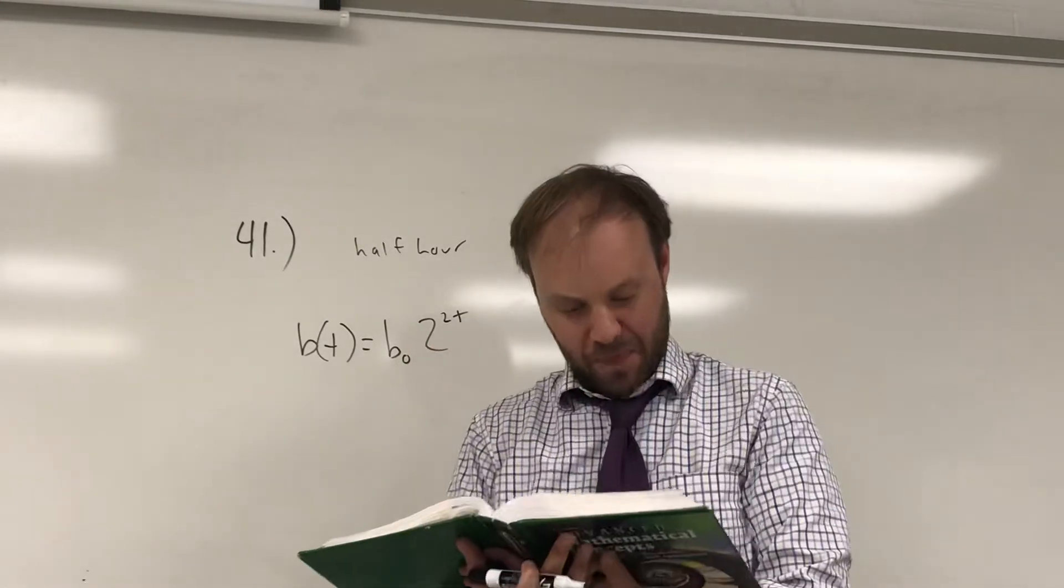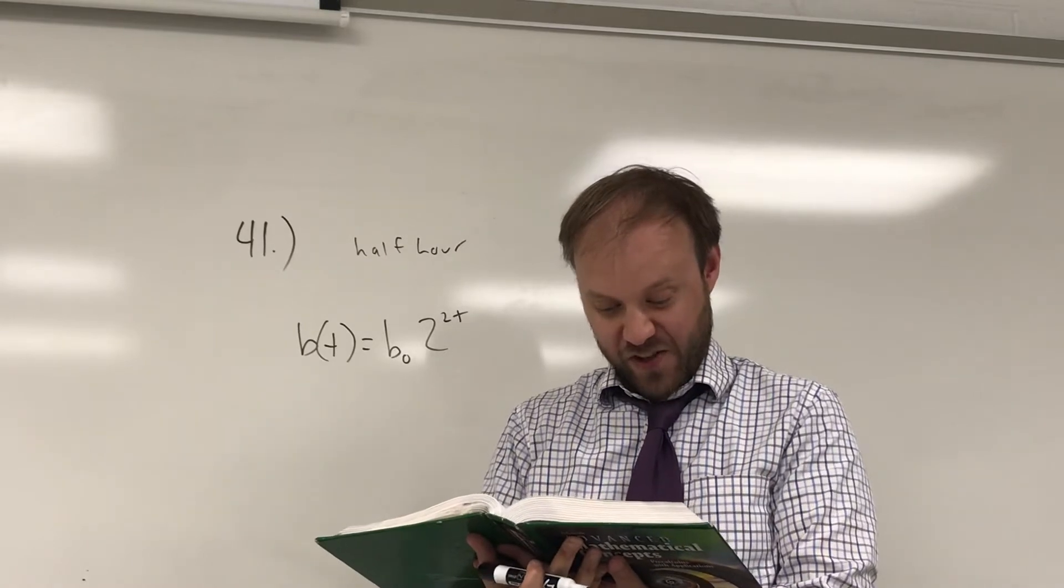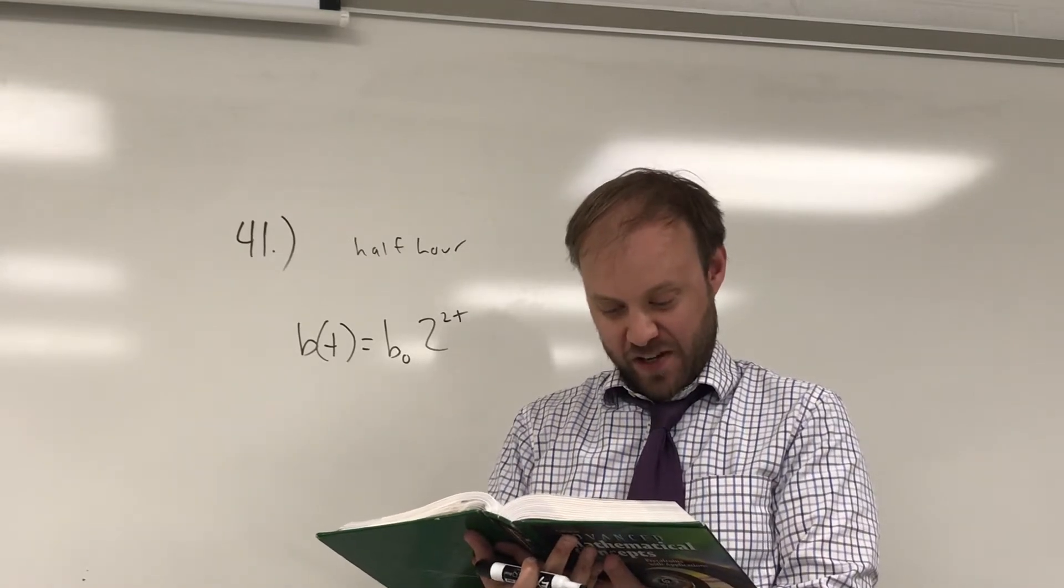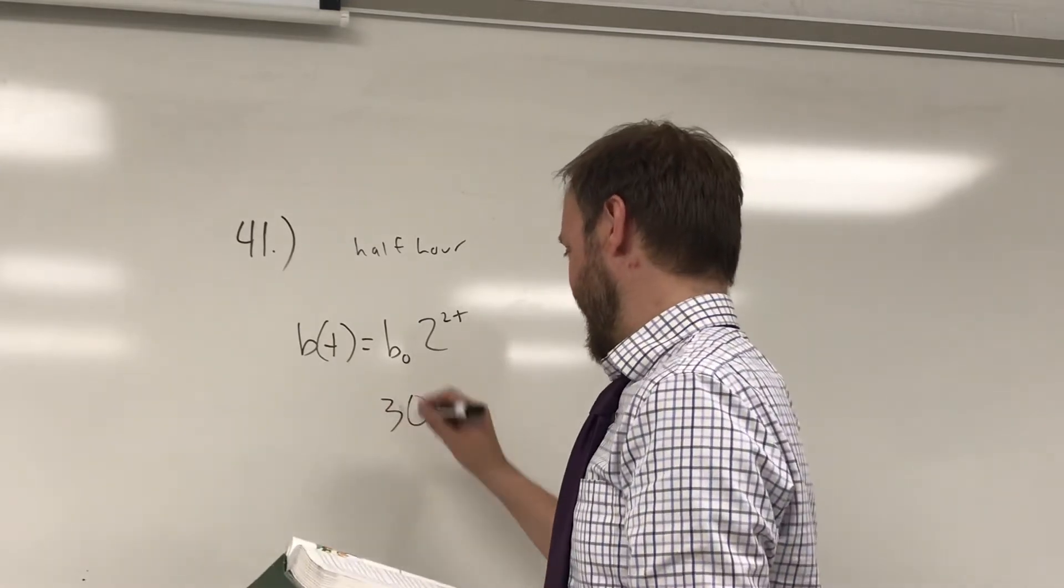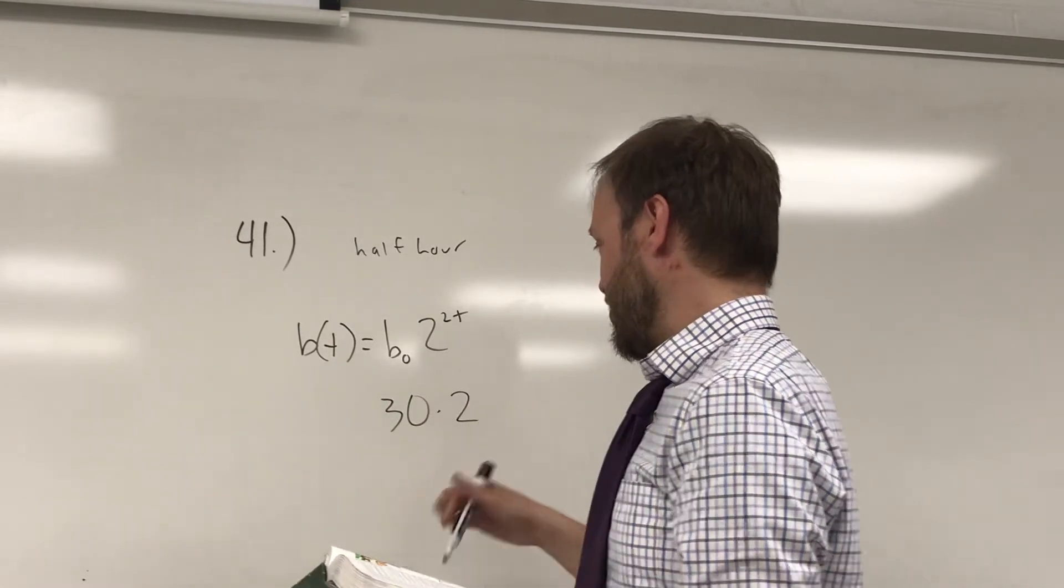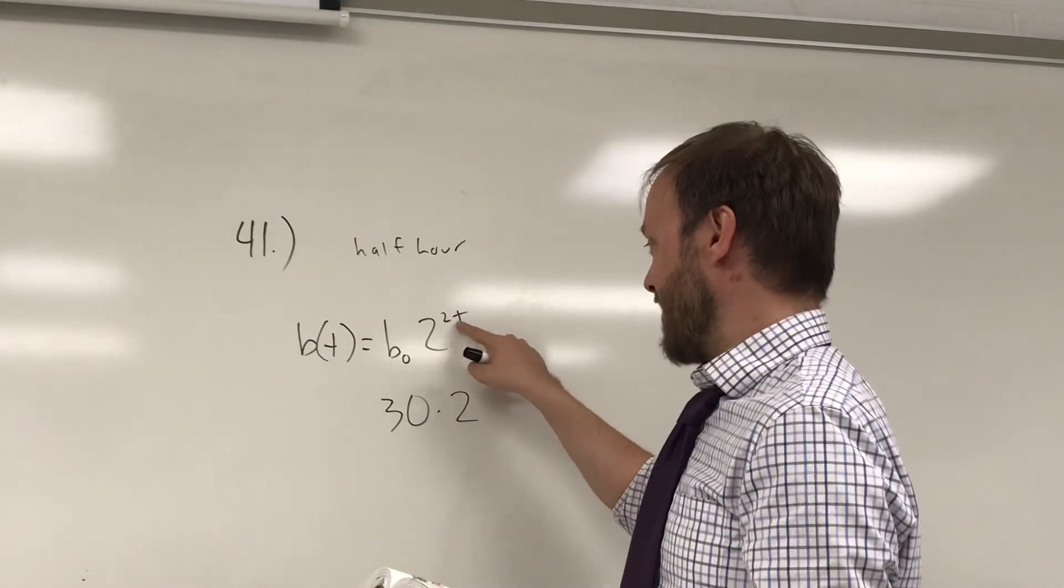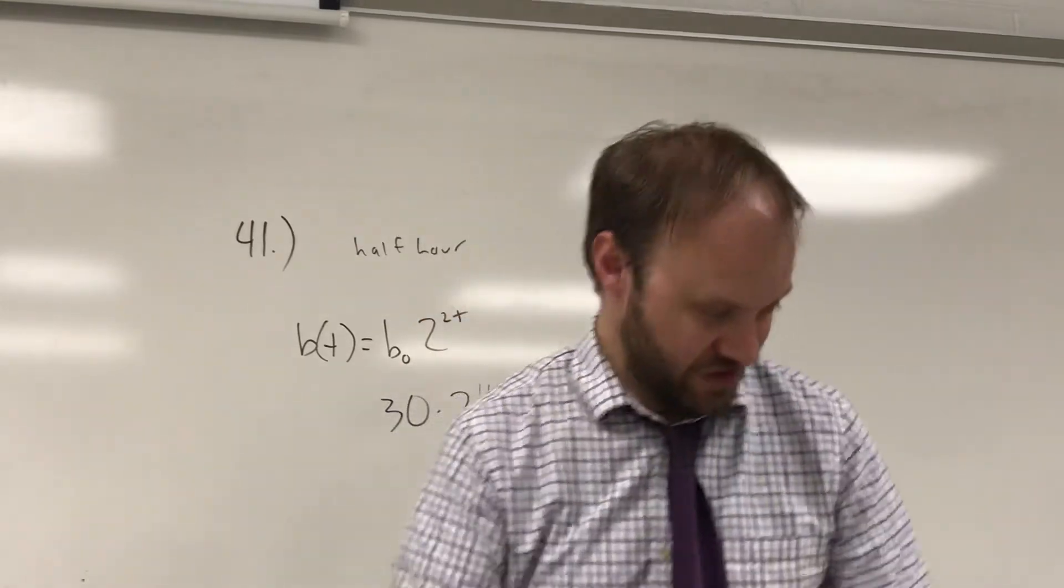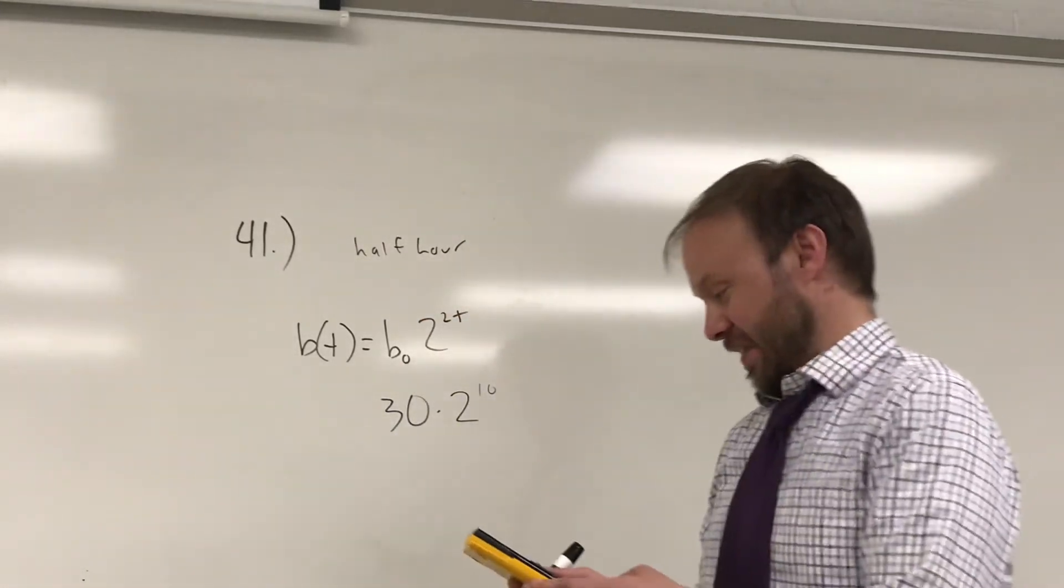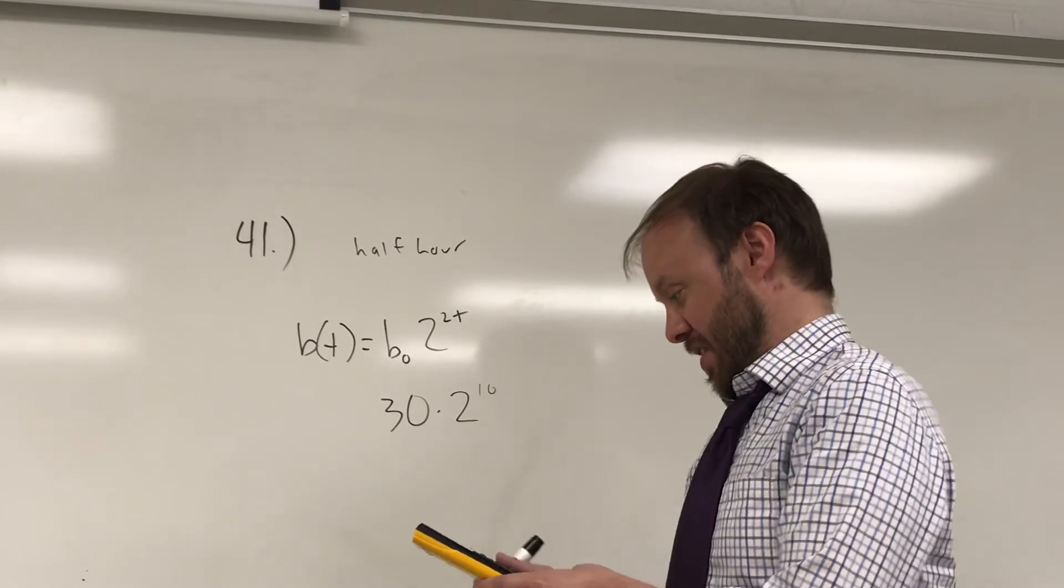Okay, part B: suppose a petri dish contains 30 bacteria, use the equation to determine the number of bacteria present five hours later. So starting at 30, we're multiplying by two every half hour. Five hours go by, two times five is gonna be ten, it's gonna go through ten doublings, and so you can drop that in the calculator. 30 times two to the tenth power is going to be approximately 30,720, actually not approximately, exactly.